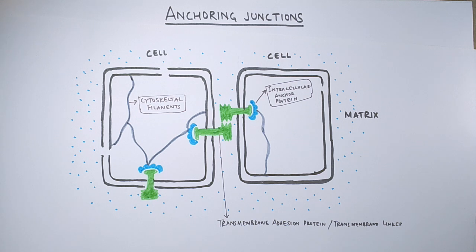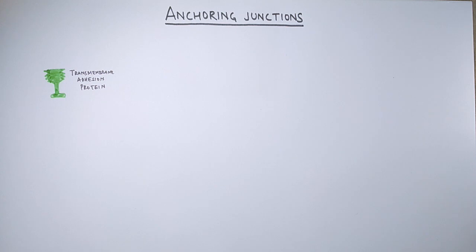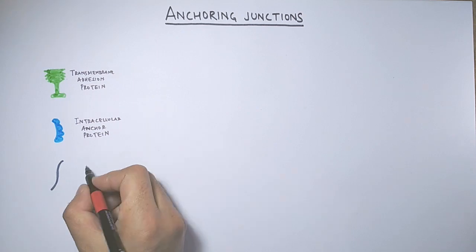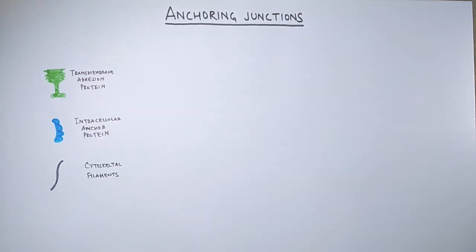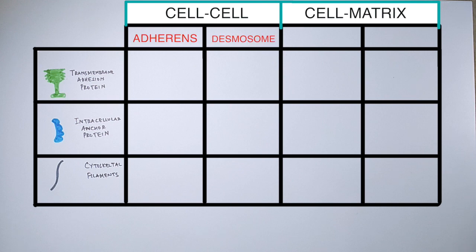In this way, cytoskeleton filaments are linked with the transmembrane linker proteins. This whole complex structure of proteins is the anchoring junction that bridges the two cells or bridges the cell with the matrix. In anchoring junctions, there are three important proteins: the transmembrane adhesion protein (transmembrane linker), the intracellular anchor protein, and the cytoskeleton filaments. Two types of junctions occur: cell-to-cell junctions and cell-to-matrix junctions. Cell-to-cell junctions include adherens junctions and desmosomes, while cell-to-matrix junctions include actin-matrix linkage junctions and hemidesmosomes.